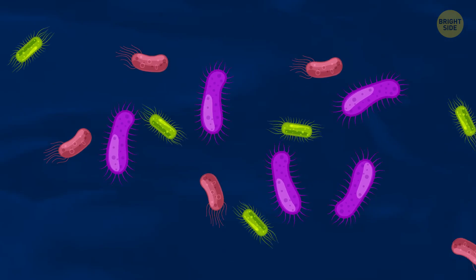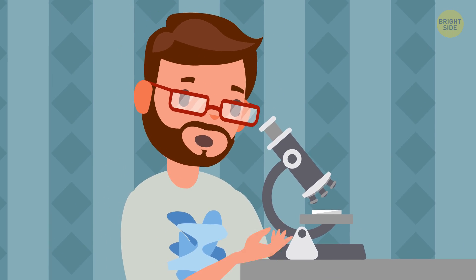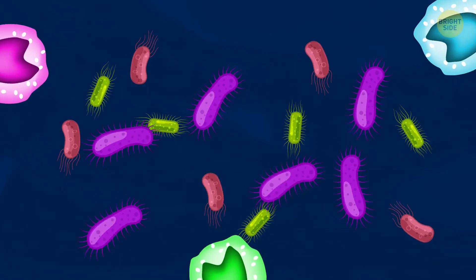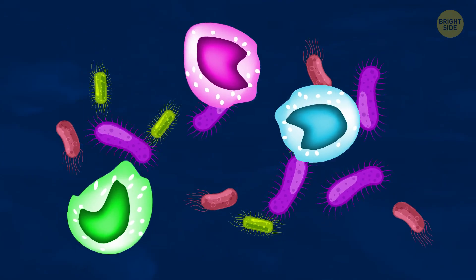It may seem there's only bad bacteria around us, but we also have some friends too. They appear with the oil created by your glands. These bacteria help your immune system fight against bad microbes.